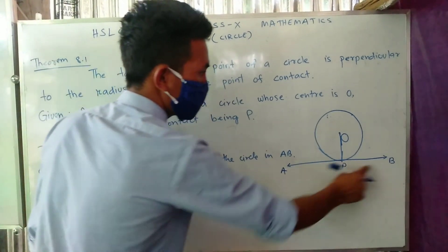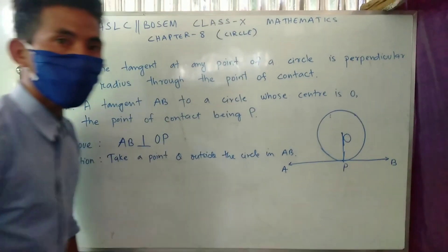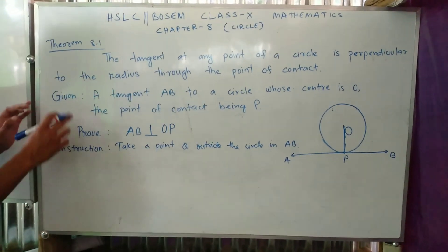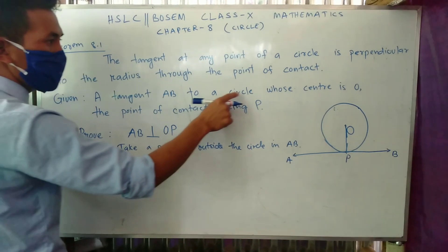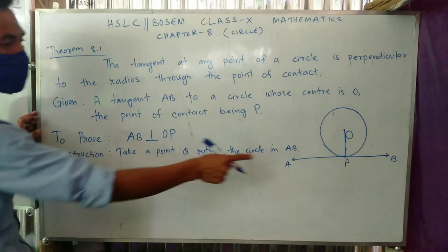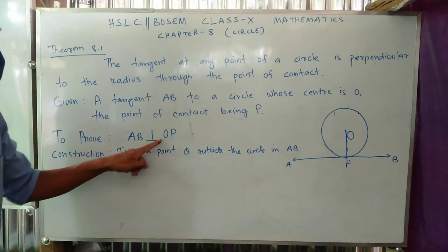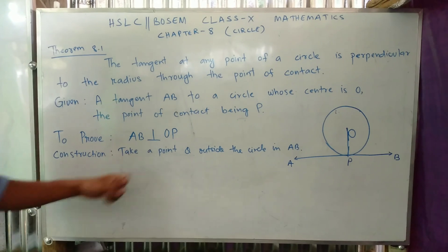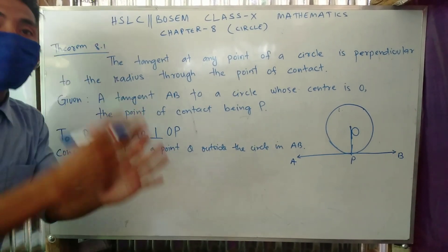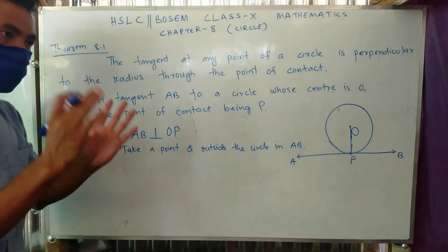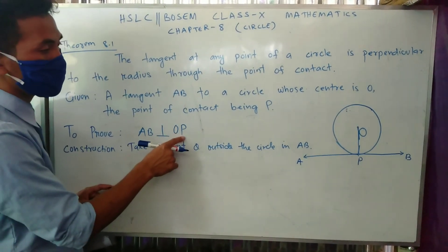OB is perpendicular to AB — this is what we need to prove. The point of contact is the point where the tangent meets the circle. We need to prove AB is perpendicular to OP, where P is the point of contact. A-B perpendicular to O-P is our proof statement.